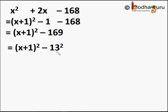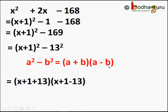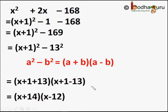What we have now is in the form a squared minus b squared, and we know factorization is super easy using the identity a squared minus b squared equals a minus b into a plus b. Here, a equals x plus 1 and b equals 13, so we get x plus 1 plus 13 into x plus 1 minus 13. The two factors are therefore x plus 14 and x minus 12.